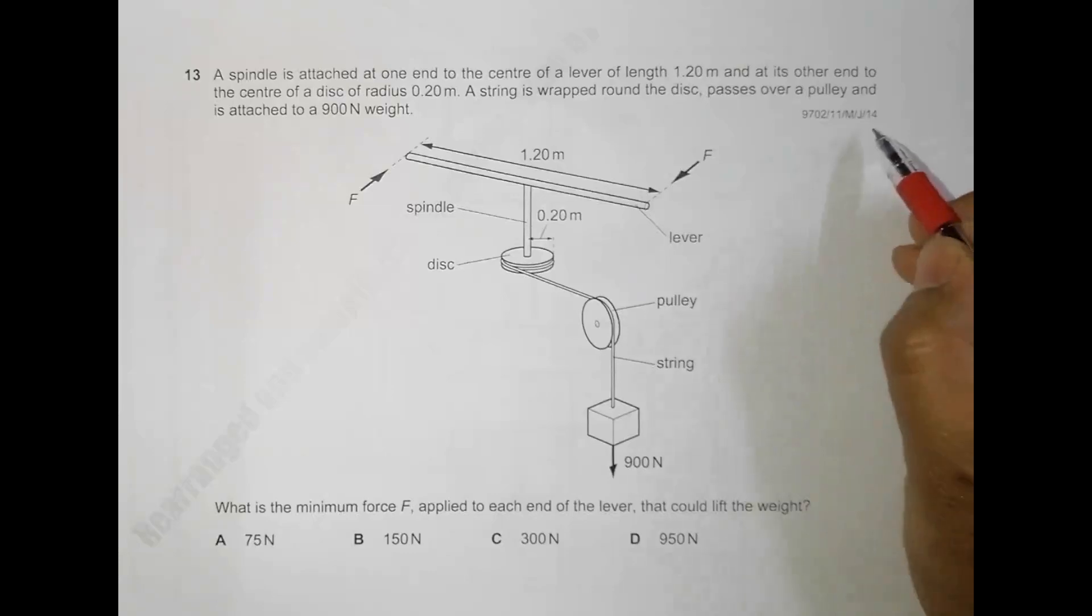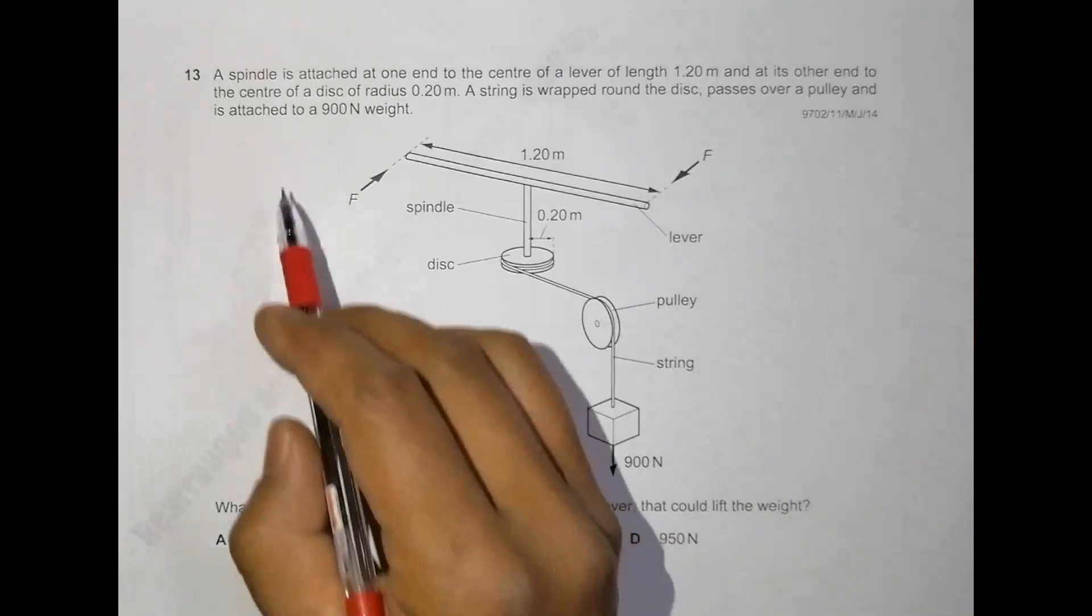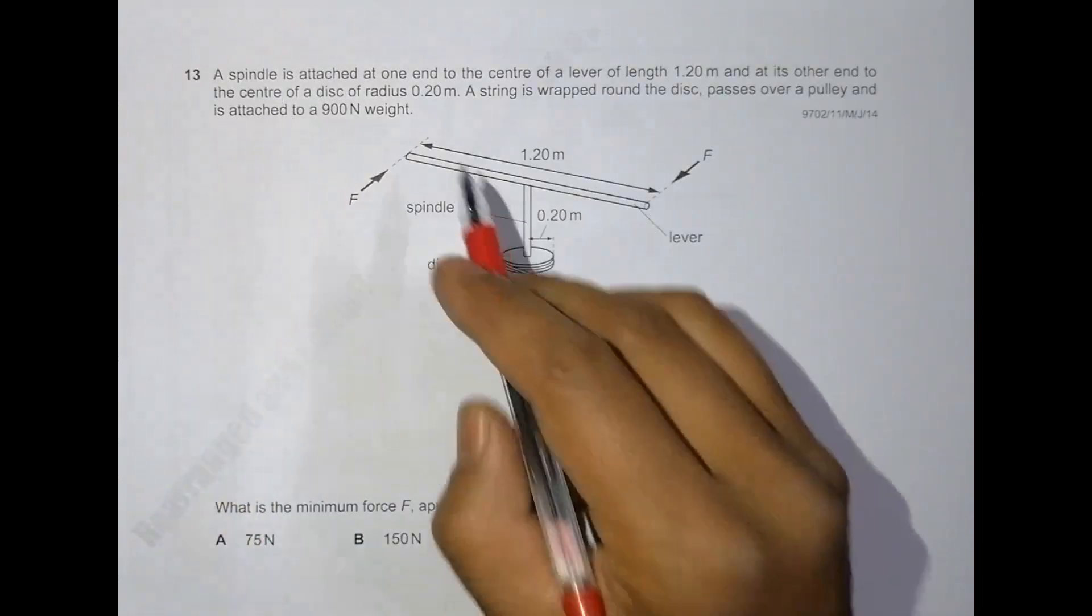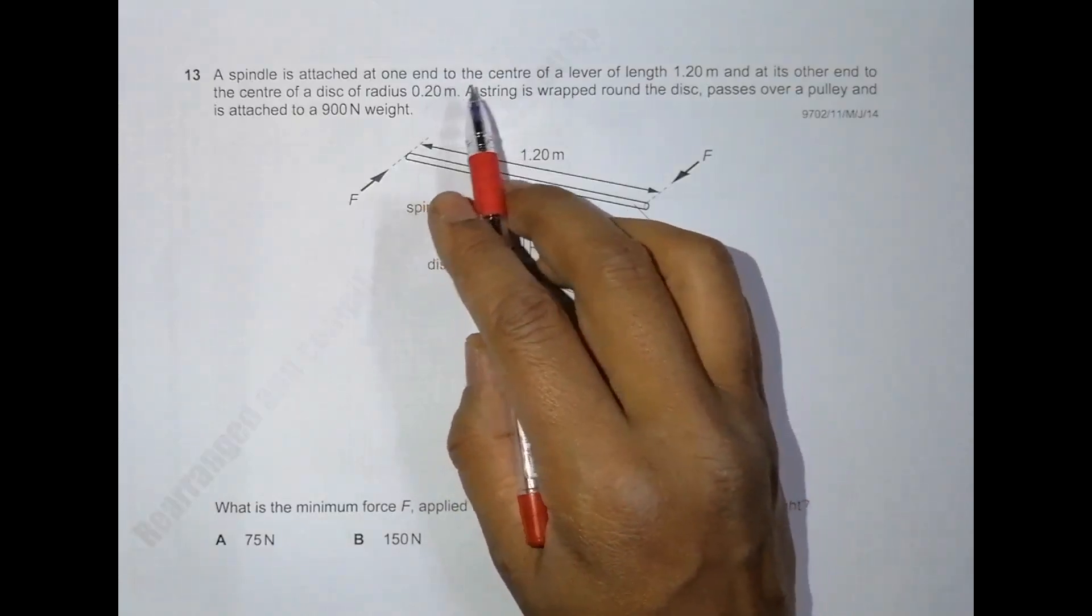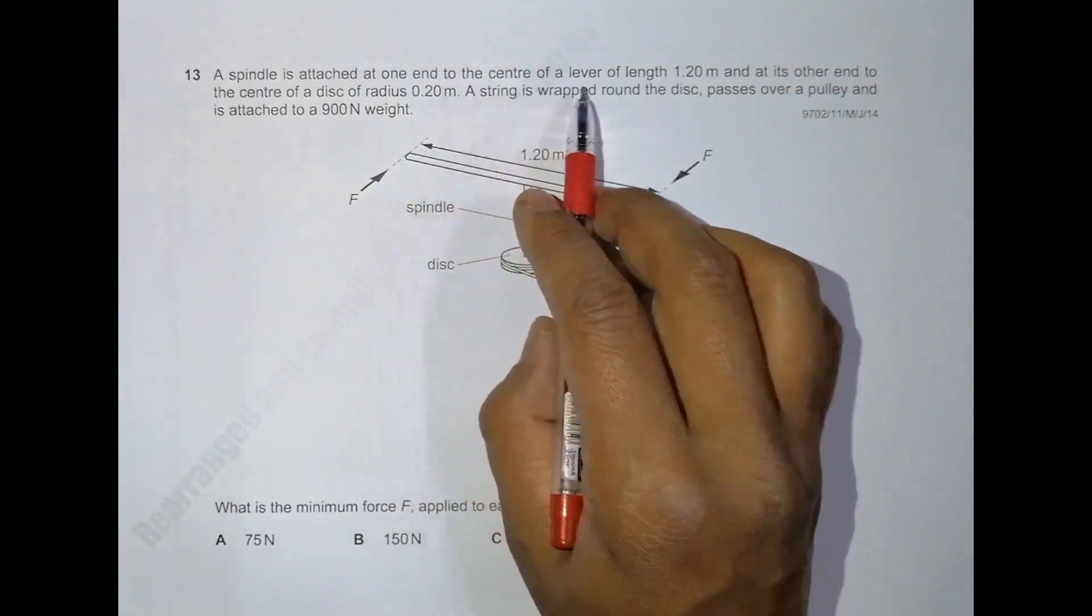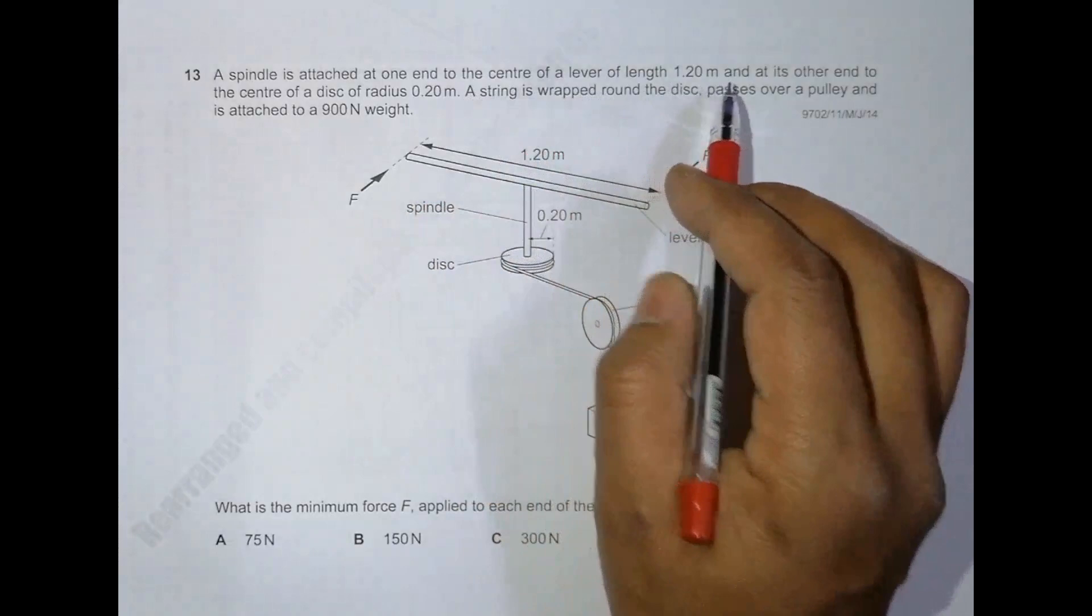Hello folks, this is your 2014 Meizun paper 11, question number 13. A spindle is attached at one end to the center of a lever of length 1.2 meters.